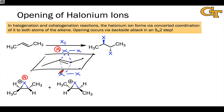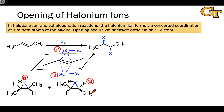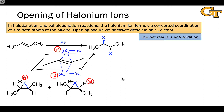And this direction of approach from the bottom, which I'll label B, leads to the halonium ion on the right. It's worth verifying this on your own — try to visualize the approach of X2 to the alkene and verify that these are the halonium ions that result from these directions of approach.